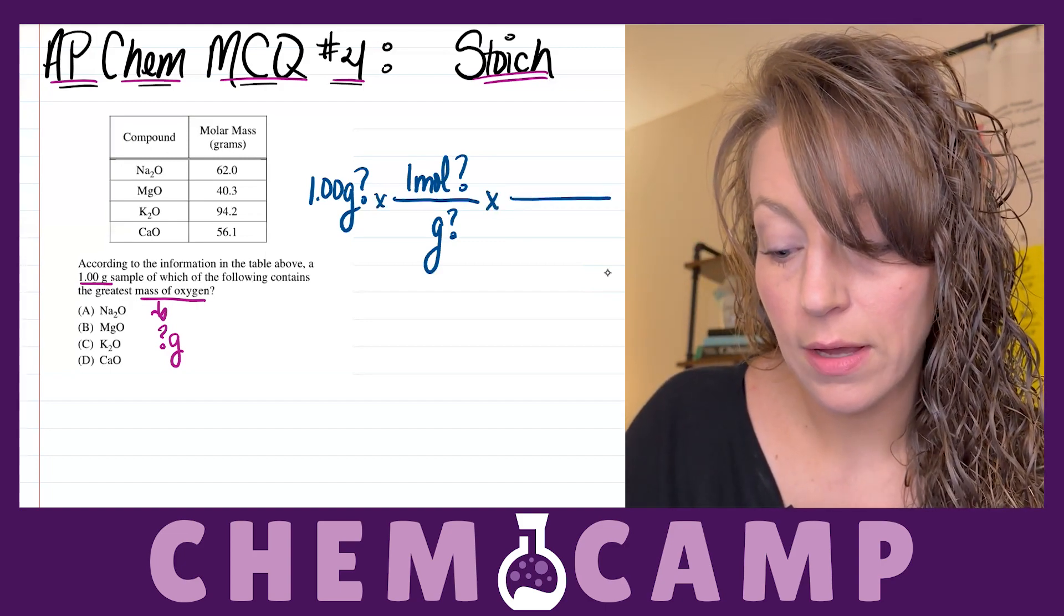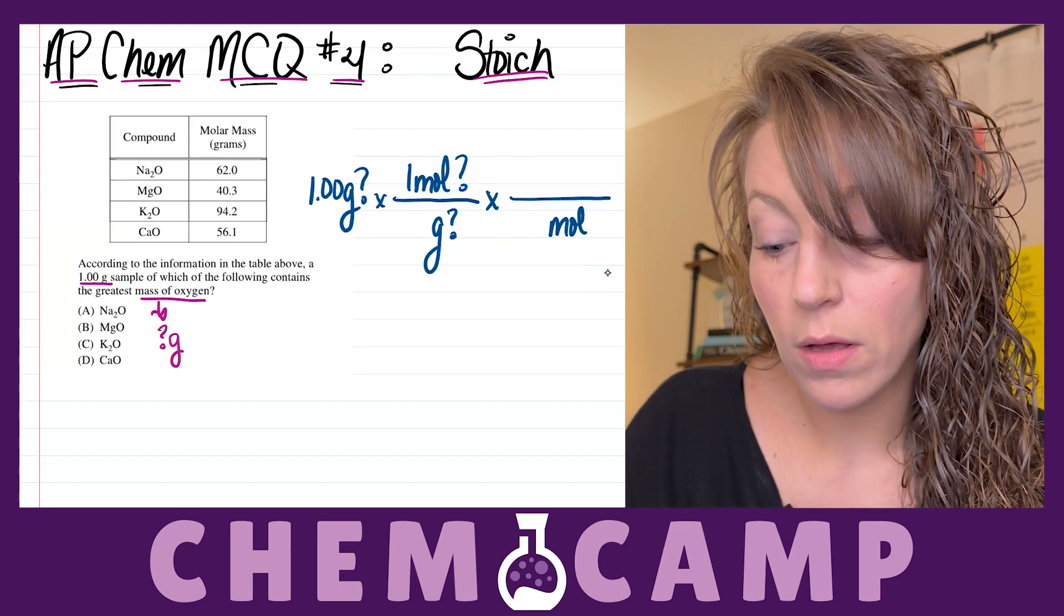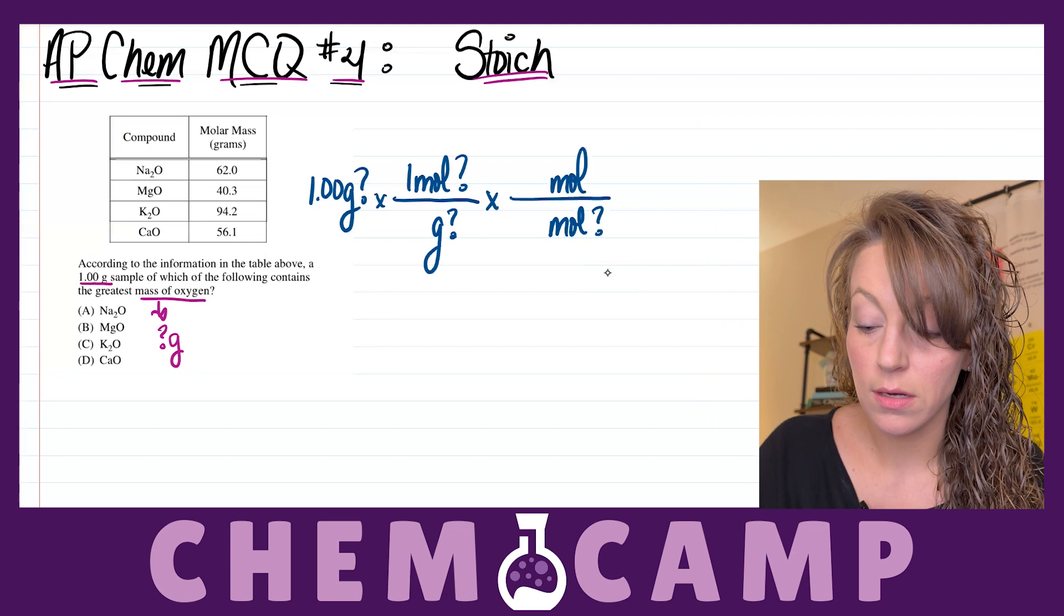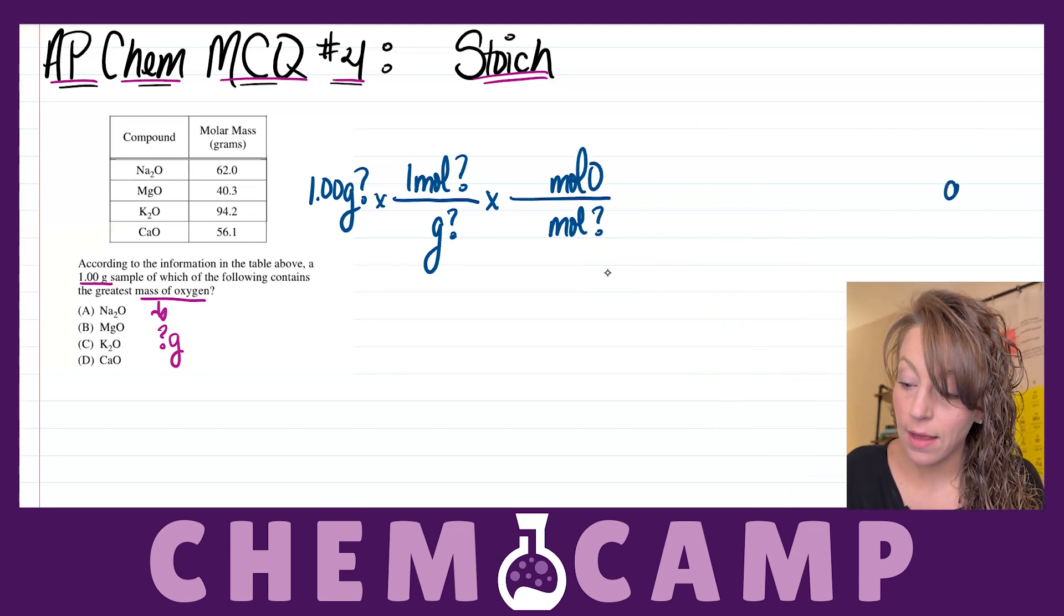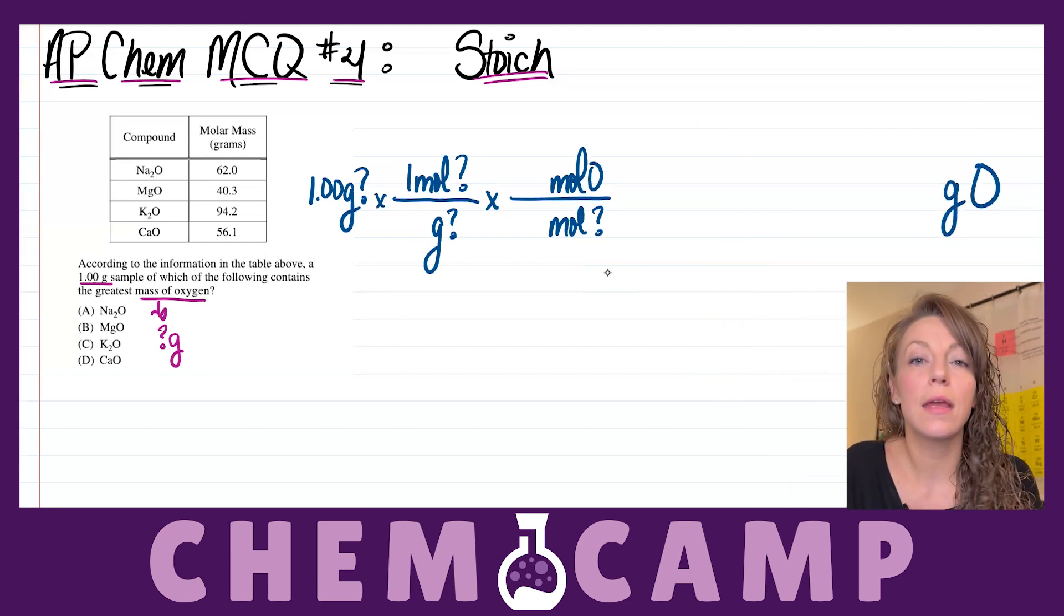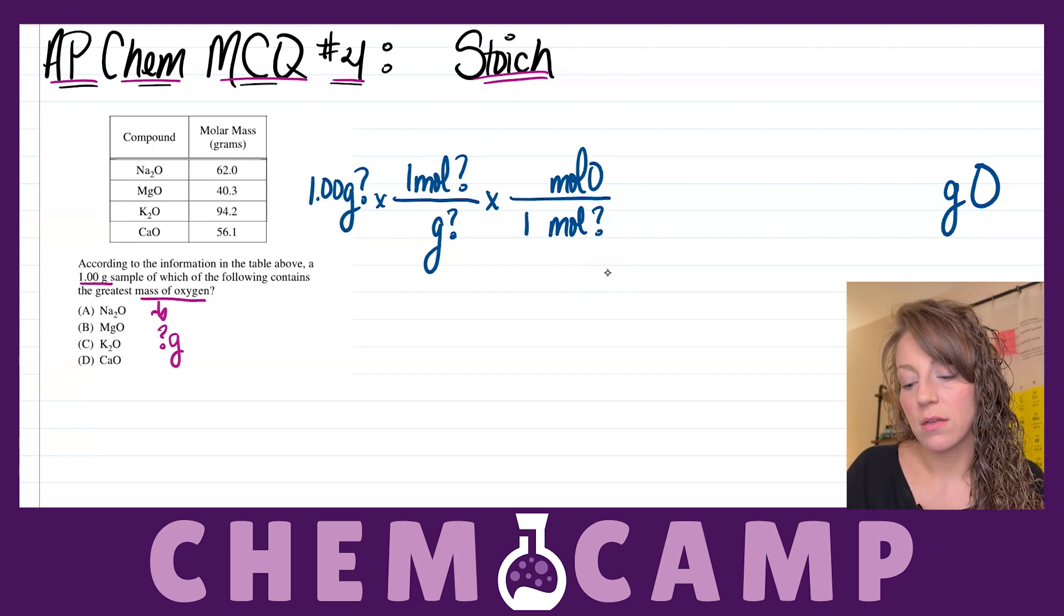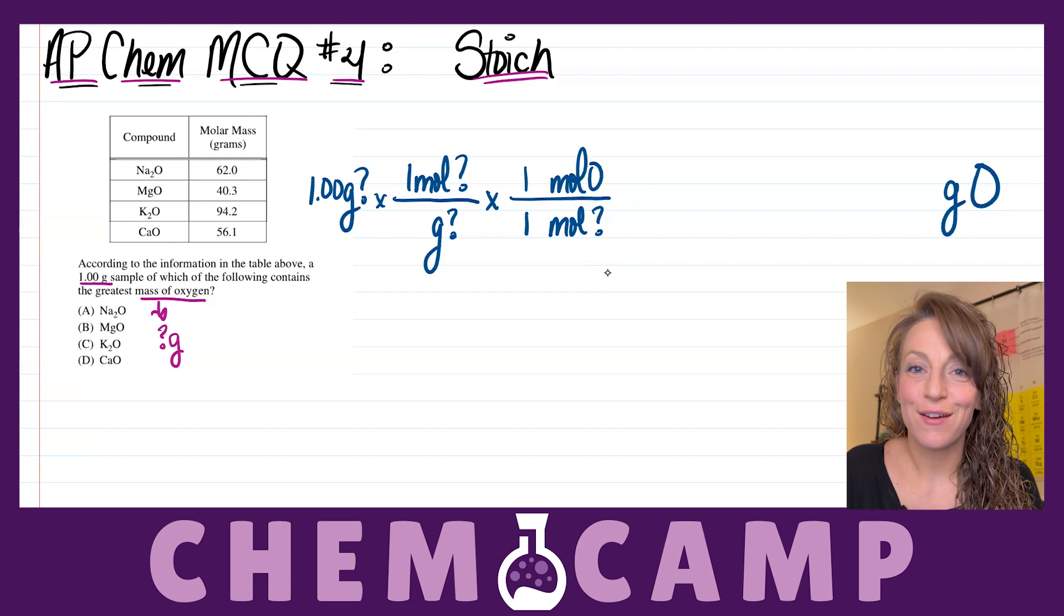From there I know I can convert from one mole of one of those compounds to moles of oxygen, keeping in mind that I actually want to work towards getting grams of oxygen. So for every one mole of those compounds I actually have one mole of oxygen, so the mole to mole ratio there is one to one.